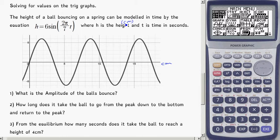So the first question, what is the amplitude of the ball's bounce? Well, remember that amplitude is always only from the midline to the top, or from the midline to the bottom. And if you notice there, there's no plus term out the back, so it hasn't been shifted up and down any.